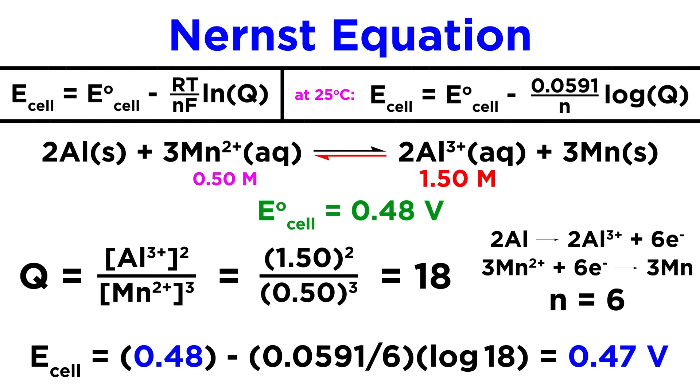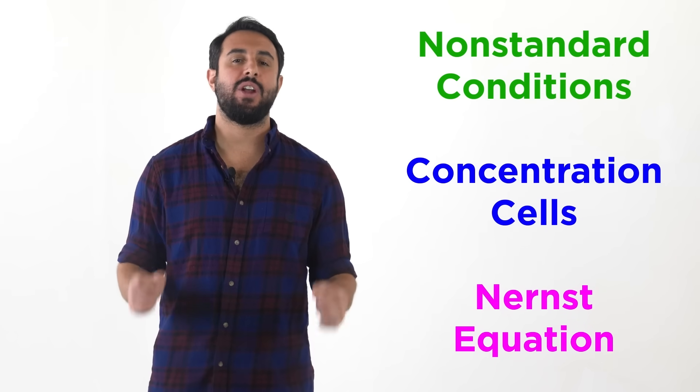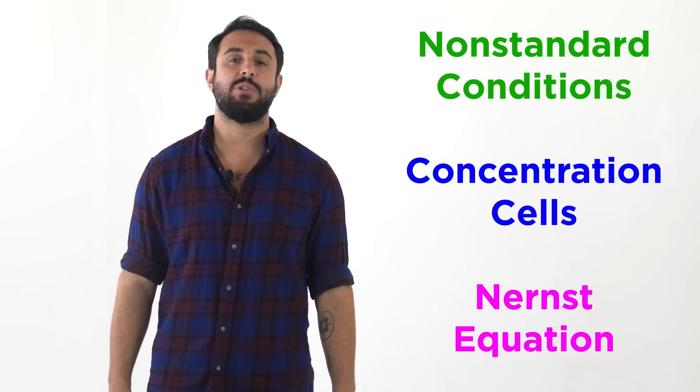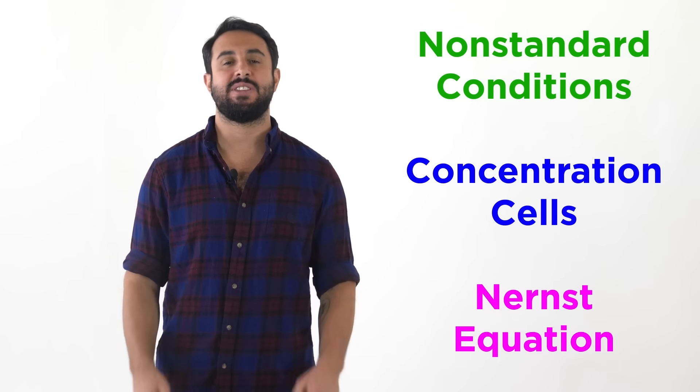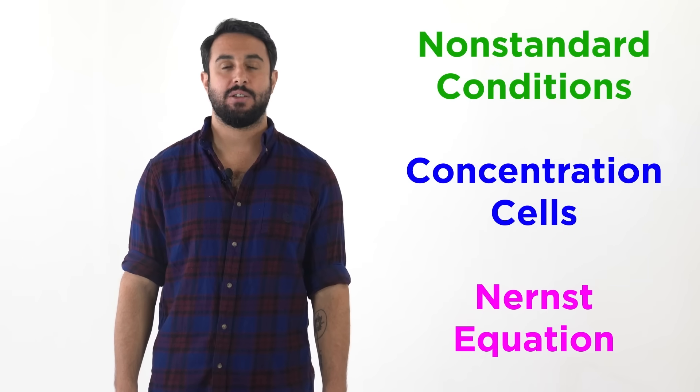So Le Chatelier's principle predicts a decreased cell potential given the diminished forward reaction. So we now understand how non-standard conditions affect cell potential. We also should be able to calculate non-standard cell potentials for a concentration cell using the Nernst equation. Professor Dave for Chegg, see you next time.